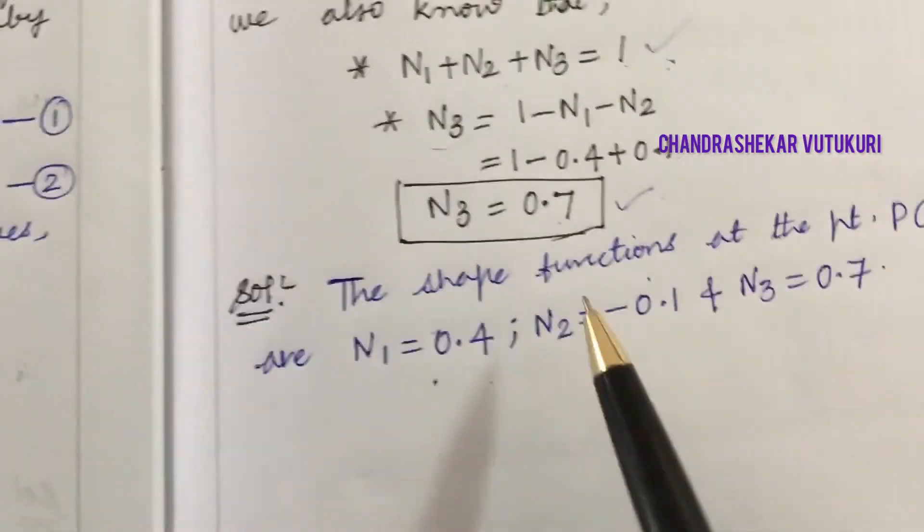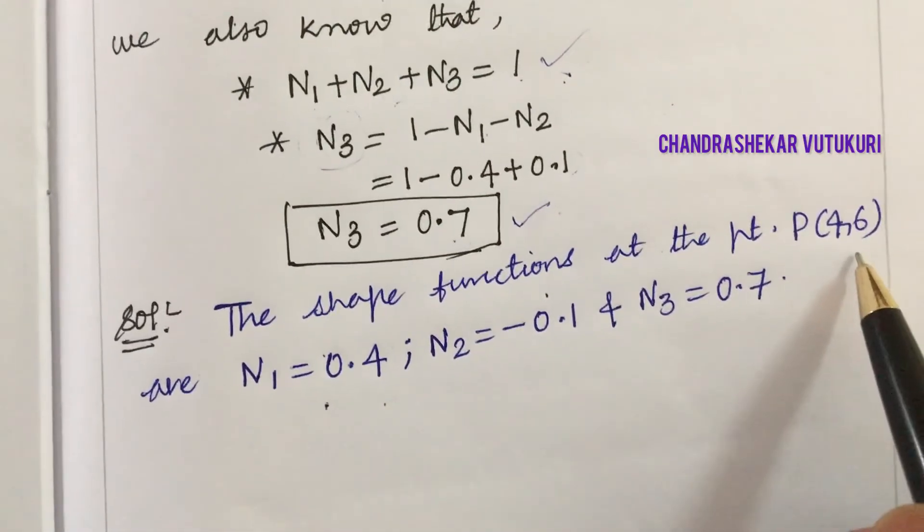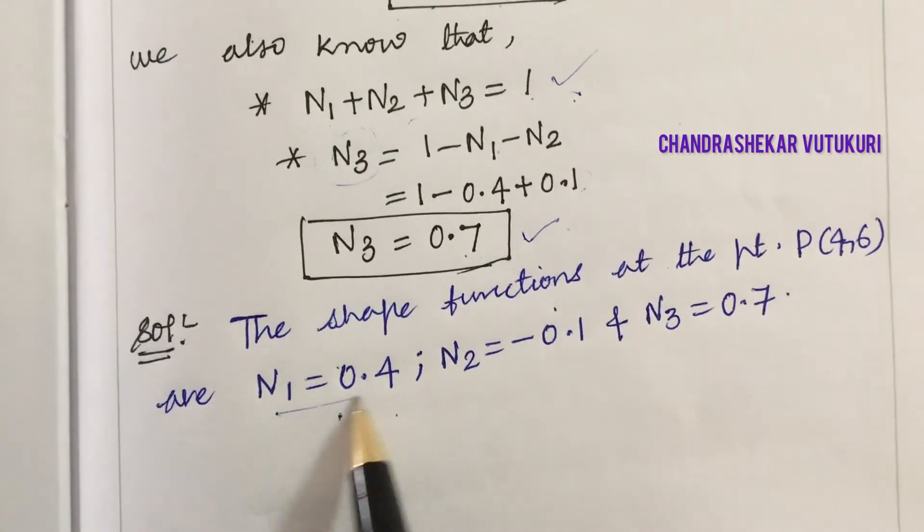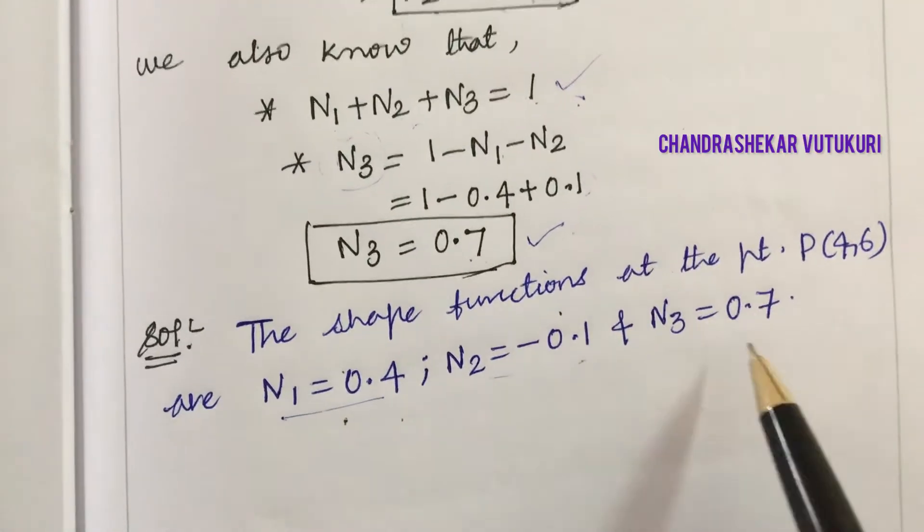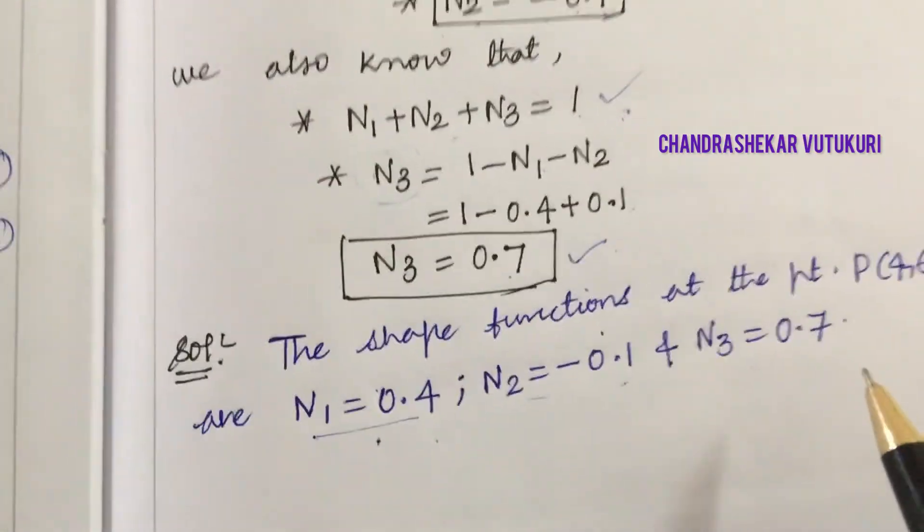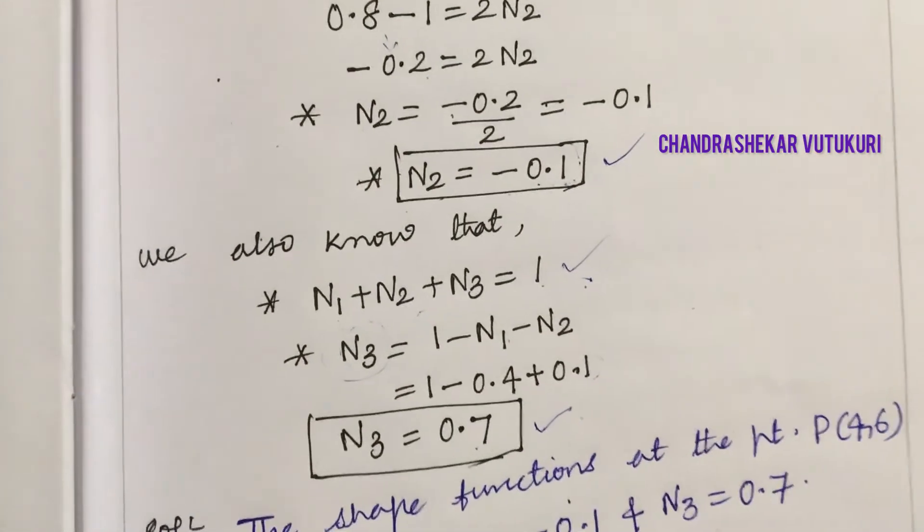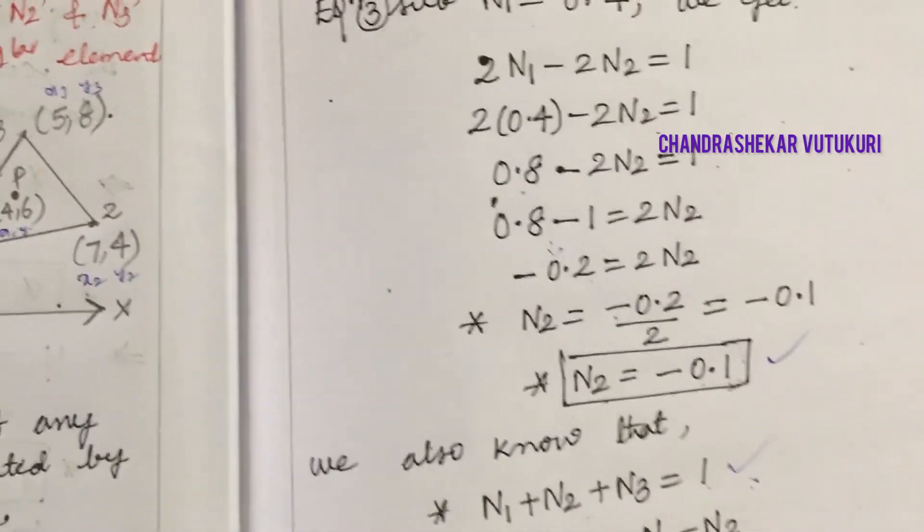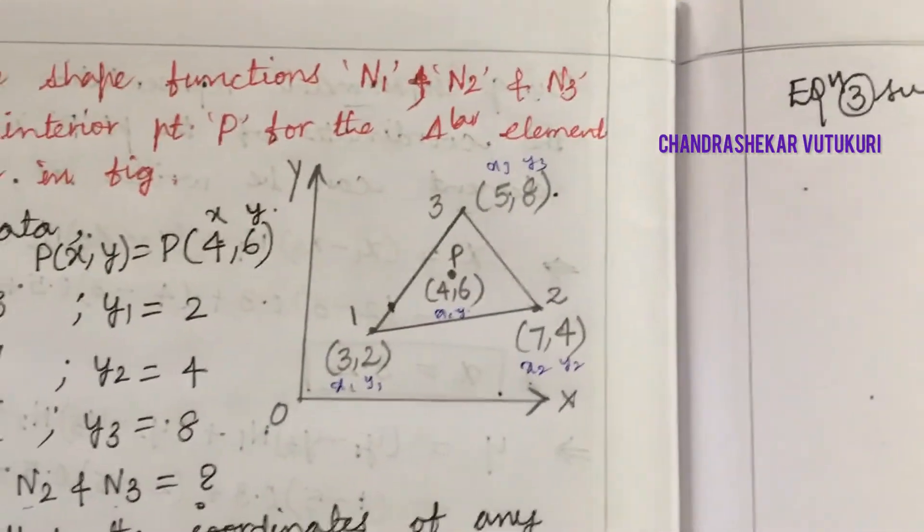Hence, the result is proved. The shape functions at point P(4,6) are N1 equals 0.4, N2 equals negative 0.1, and N3 equals 0.7. This is how you work out problems related to constant strain triangles when asked to find shape functions.